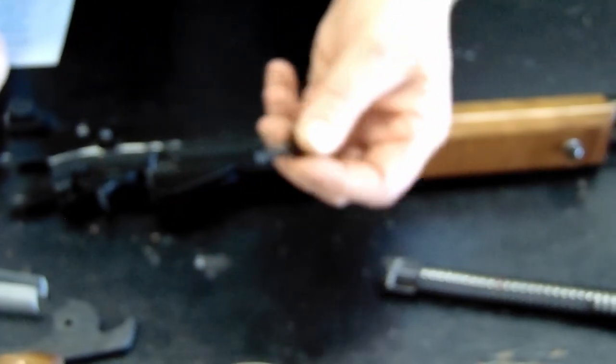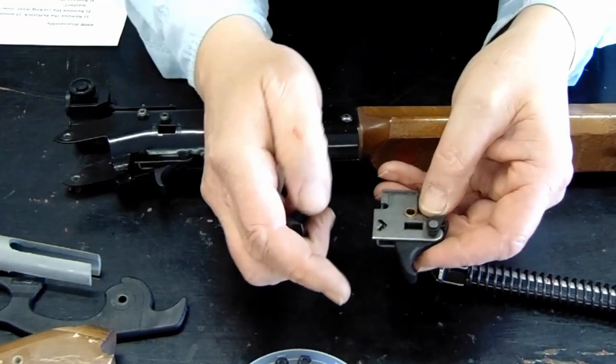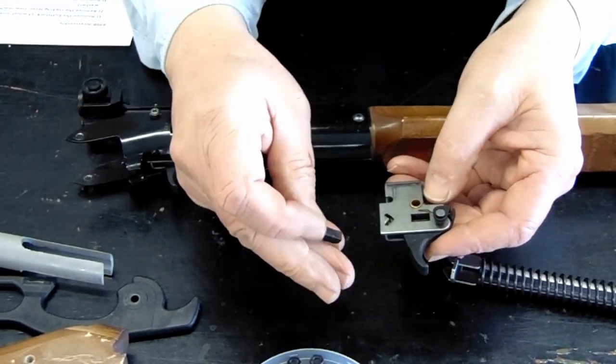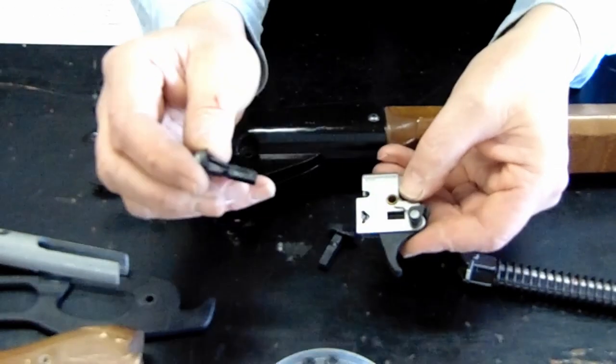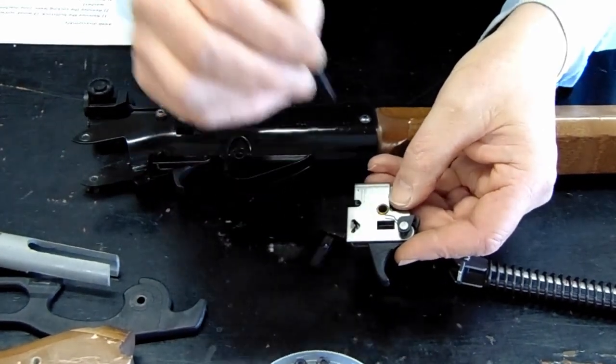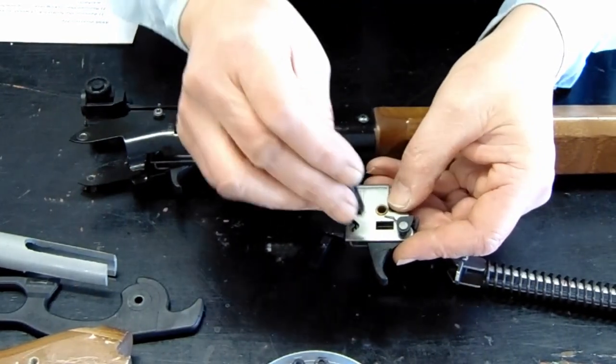Now we have to put the safety back in. So what we're going to do with the safety is we're going to be inserting it through this hole, through the square hole in the trigger.